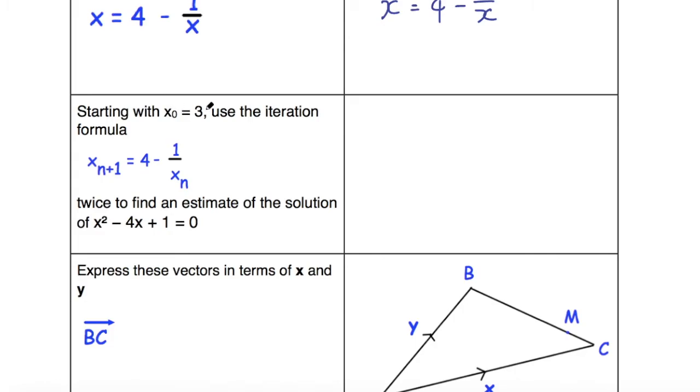Okay, so we're starting with x₀ = 3. We need to substitute that 3 in where the x_n is in this formula. So we can say that x₁, the next iteration, will be 4 - 1/3.